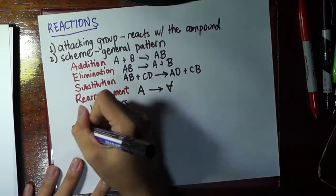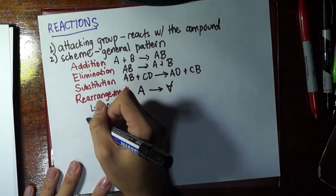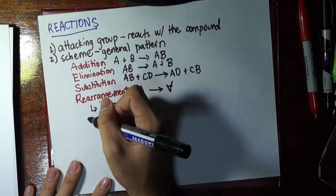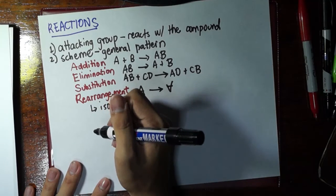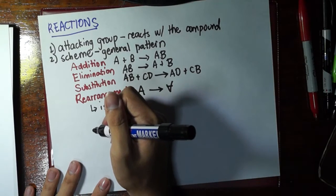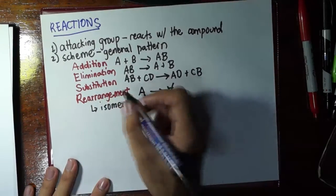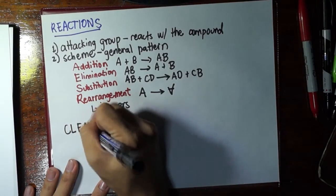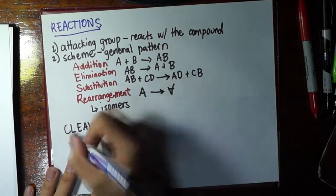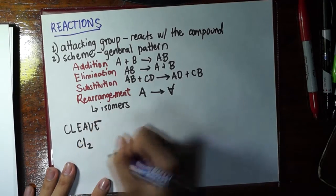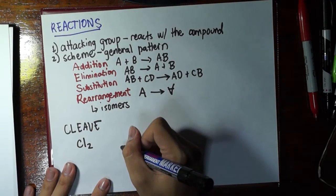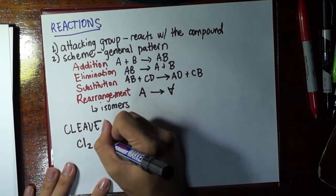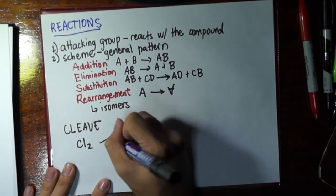Now, the attacking group is a result of the breakage of a bond. So, meaning, the attacking group must have a kind of charge. And to yield an attacking group, we should be able to cleave a bond. So, for example, I have a Cl2 here, a chlorine molecule.